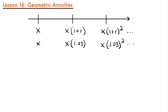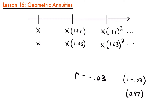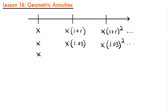We could also have a rate where payments decrease over time, such as r = −0.03, meaning every payment period you pay 3% less than the previous period. In that case the quantity becomes 1 − 0.03, so we're multiplying by 0.97 every period. On the timeline we'd have the original payment x, then x times 0.97, then x times 0.97 squared, and so on. These different series are all examples of annuities with a geometric progression.